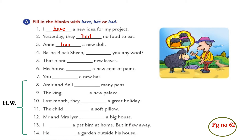Fourth one: Baa baa black sheep, dash you any wool? This one's very easy, you know this rhyme. With you, we always use have. Fifth: That plant dash new leaves. Plant is singular and it is present tense, so we will write that plant has new leaves.